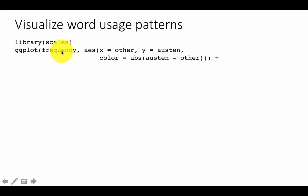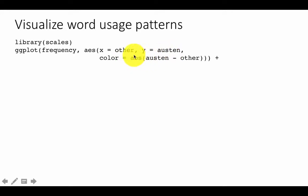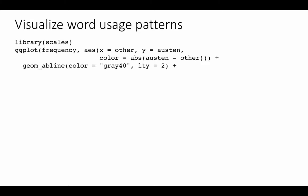We color each point by the absolute value of the difference between Austen and other — as both are proportions, larger differences produce darker points, making similarities and differences easy to spot. We also add geom_abline to draw a central reference line: points near this line indicate similar usage proportions for a given word between the two authors being compared, while points far from the line indicate greater divergence.